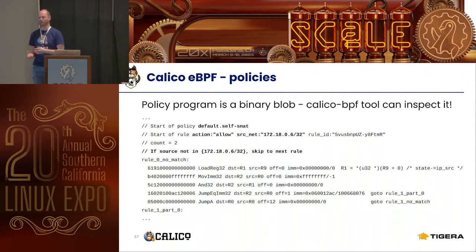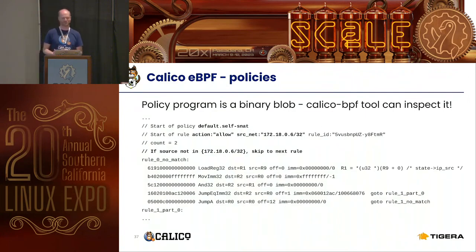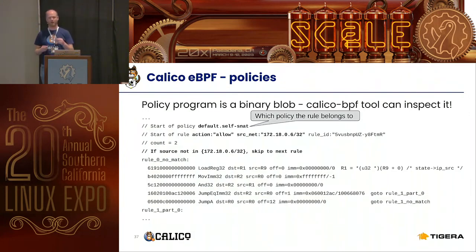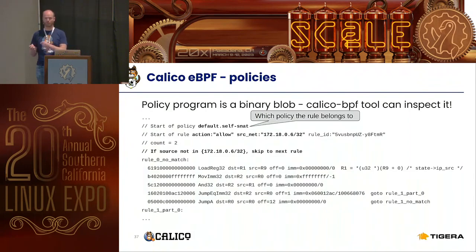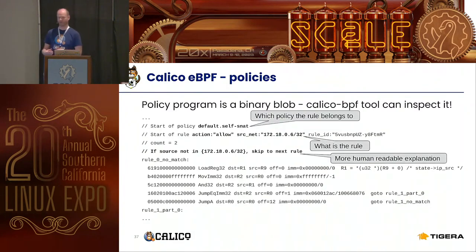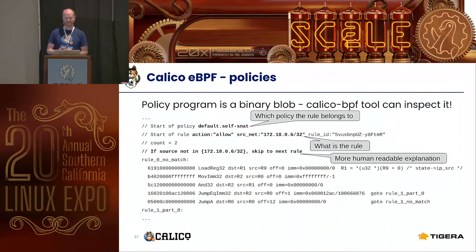The catch is that it's bytecode — a byte blob — and while you can get it out and disassemble it, that's not human readable. Now with the calico-bpf tool, you can ask for policies in a human-readable form. The output shows each rule and the policy it belongs to (which you would see in your YAML), the action being executed, and a human-readable description of what the rest of the code does. You can go through the code and verify that the policies are doing what you had in mind. There is also the actual disassembled code for those who are brave enough.